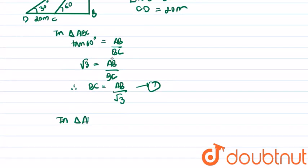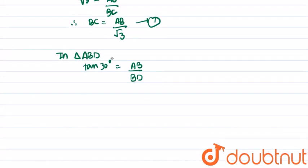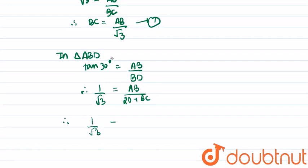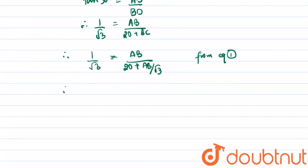In the bigger triangle, tan 30 degrees equals AB upon BD. Therefore, tan 30 degrees equals 1 upon root 3, equal to AB upon (20 plus BC). Therefore, 1 upon root 3 equals the height of the tree AB upon (20 plus BC). BC can be substituted from equation 1, that is AB upon root 3.